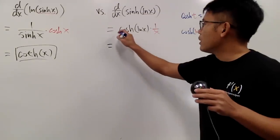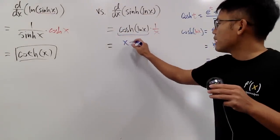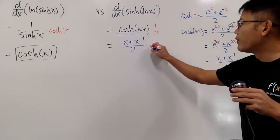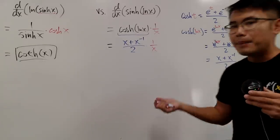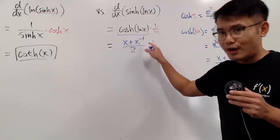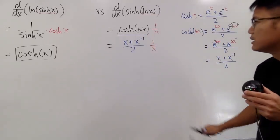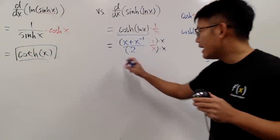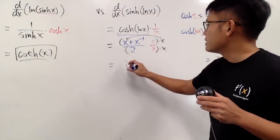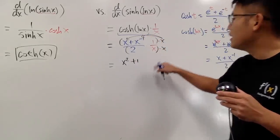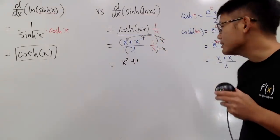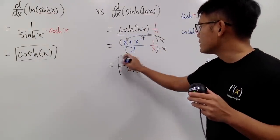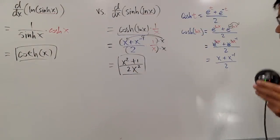So all of this is just x plus x to the negative 1 over 2, and we have to multiply by 1 over x. This gives a complex fraction, so let's multiply the top and bottom by x. On the top, x times x is x squared, and x times x to the negative 1 is just 1, giving x squared plus 1. On the bottom, it's 2 times x, which is 2x squared. So our answer is x squared plus 1 over 2x squared. That's not a bad way to do it.